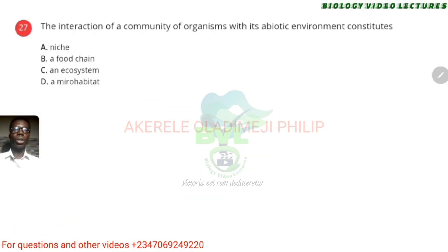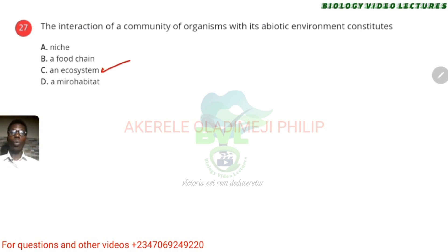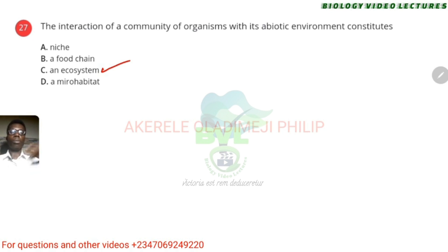The interaction of organisms with their abiotic environment constitutes an ecosystem. When a community of organisms interacts with their abiotic environment — temperature, air, water and all of those — that consists of an ecosystem.